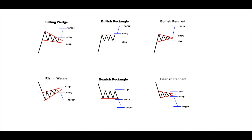We're going to start with the falling wedge. The falling wedge is found only in an upwards bullish pattern — it creates lower highs and lower lows. Your stop is going to be below the last final descending point, your entry is after the breakout, and your target is the distance between the top and bottom of the wedge. This is a bullish continuation pattern: it goes bullish, corrects slightly bearish, and then takes off bullish again.